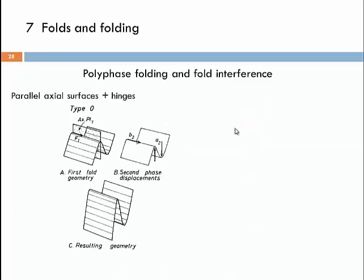Let's talk about polyphase folding — folding and fold interference — which requires two generations of folding, one overprinting the other, resulting in very complex interference patterns. Starting with a simple case: two fold generations, the first being an upright fold with a vertical axial surface, an open inter-limb angle, and a horizontal hinge line. This first folding event is overprinted by a second, geometrically similar event — also an upright fold with a horizontal hinge line — producing intensified folding with higher amplitude and smaller inter-limb angle.